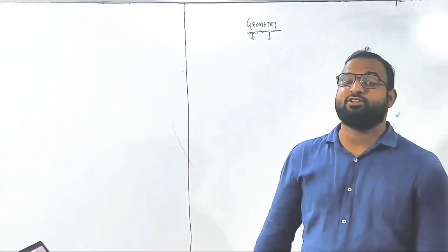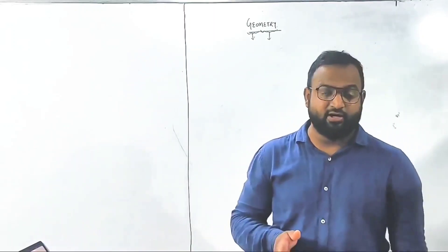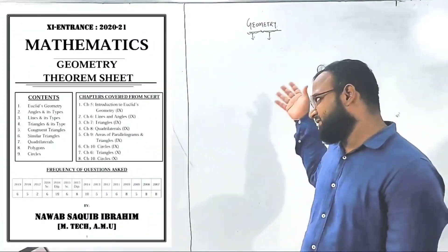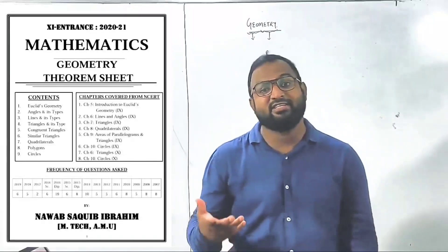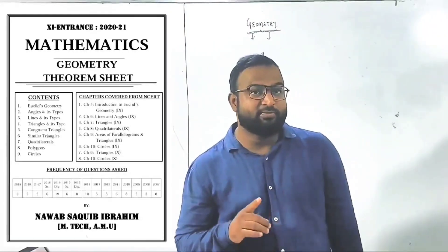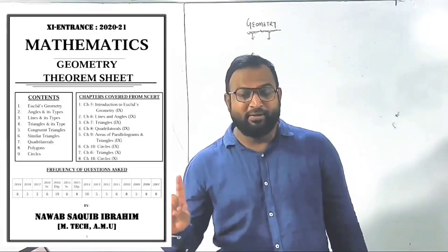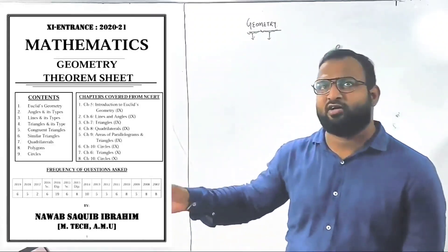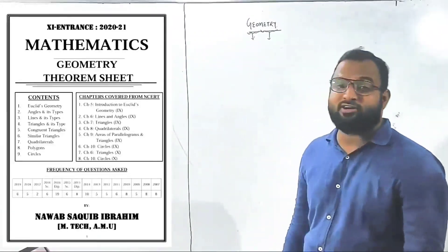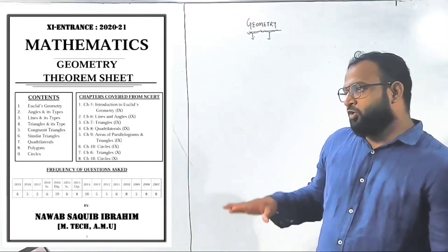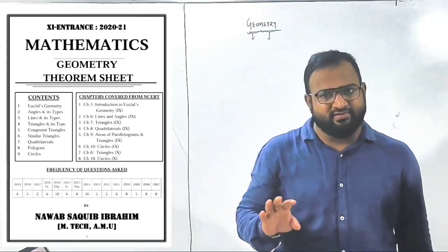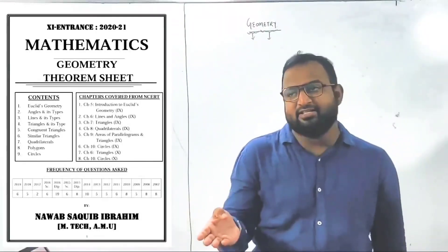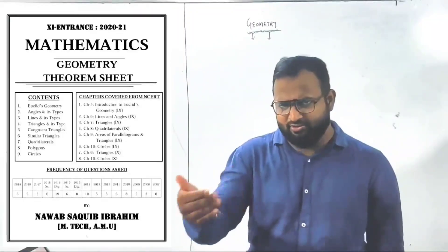Now, before starting, this is the second most important chapter. If you are not giving it importance, let me show you the trend. If you look at the last 10 years, there were 6 questions, then 5, then 6, then 10, then 5. So 6 to 8 questions are fixed from this chapter. Just in 2017 there were only 2 questions.